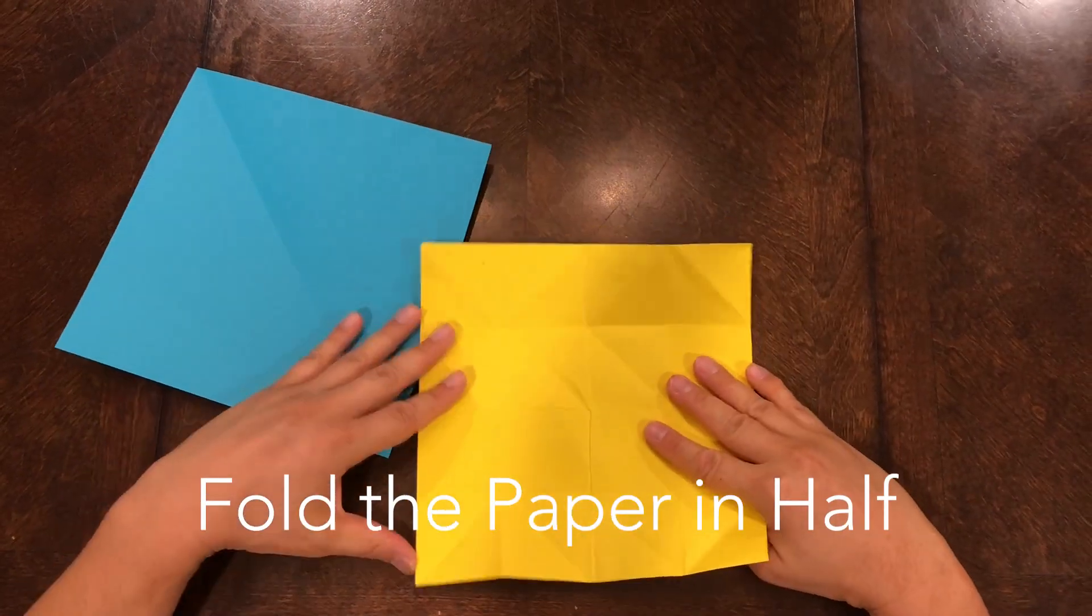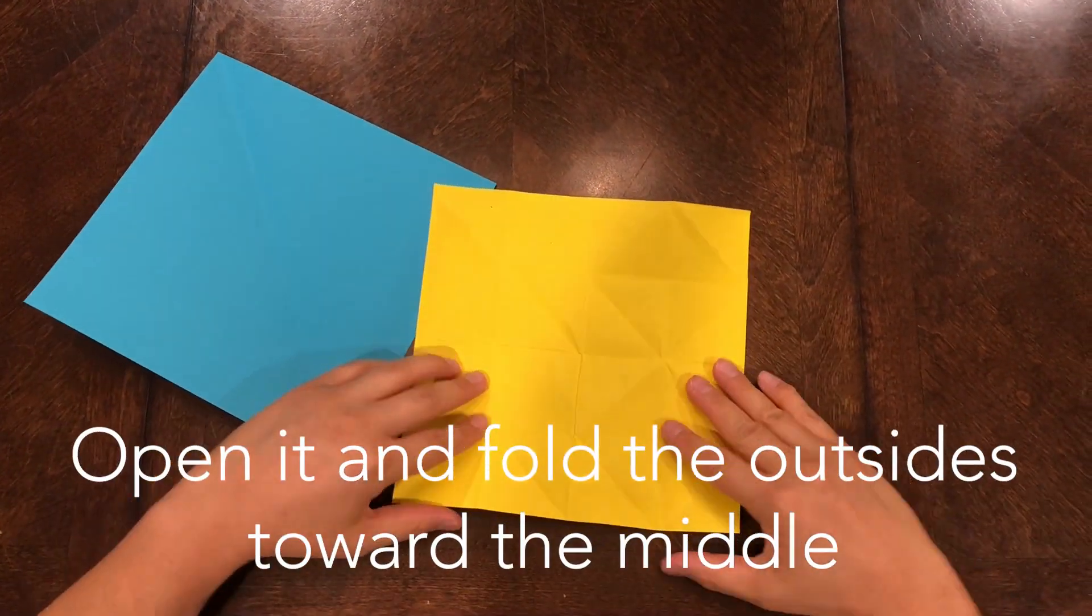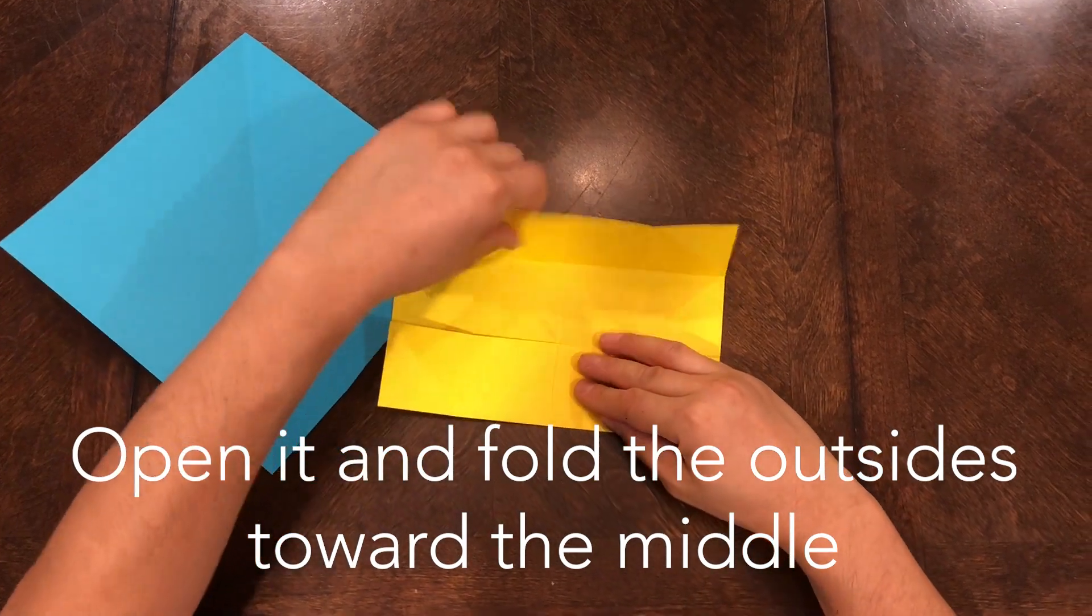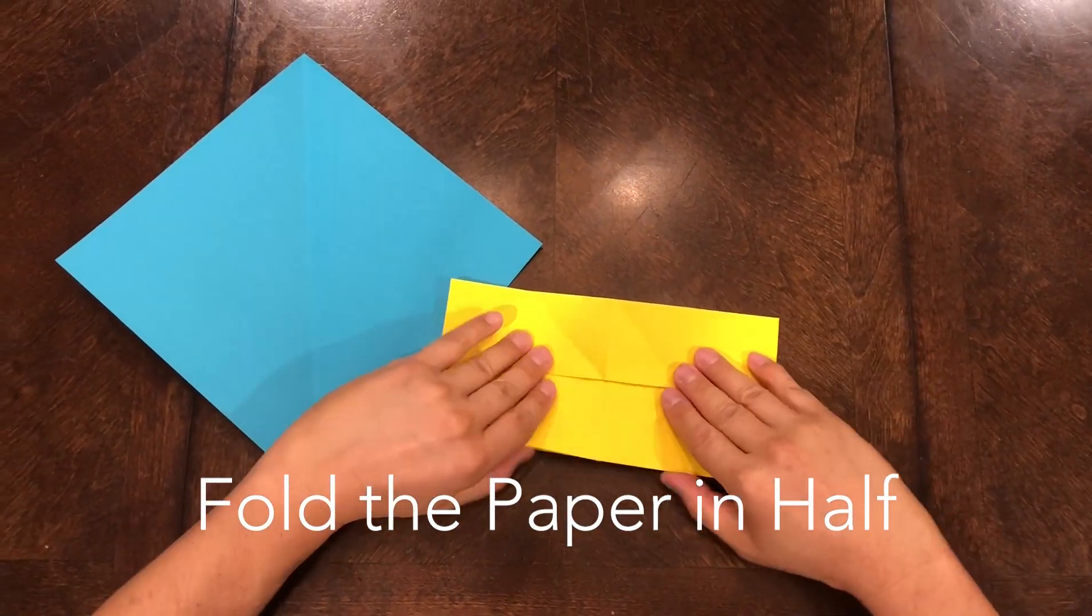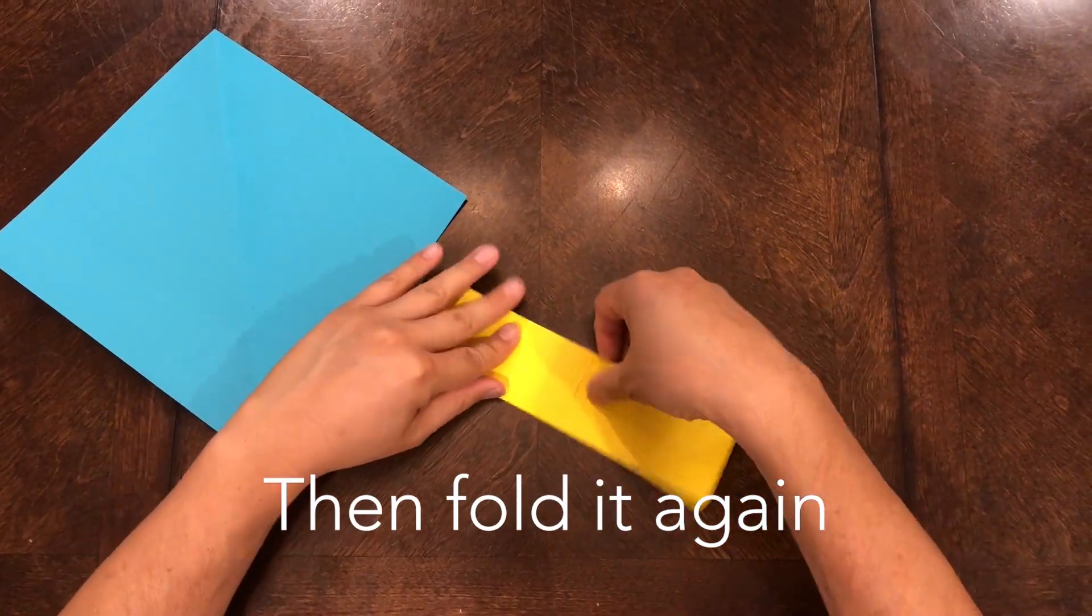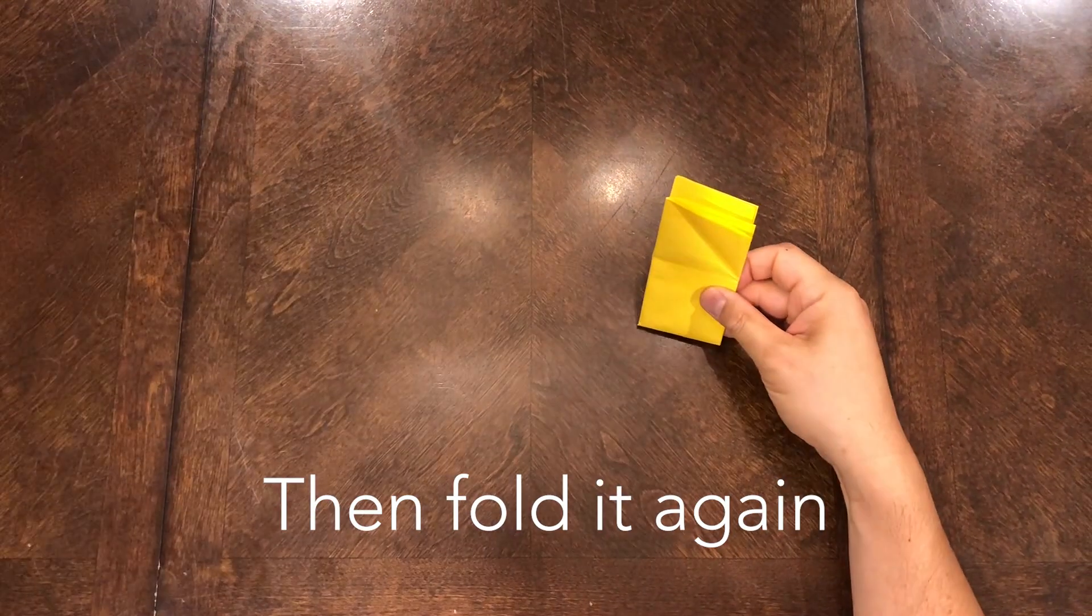Then fold the paper in half, open it, and fold the outsides toward the middle. Fold it in half, then fold it again lengthwise. Fold both papers like this.